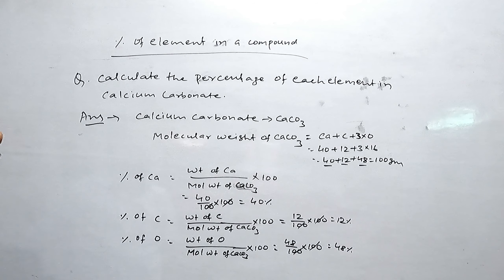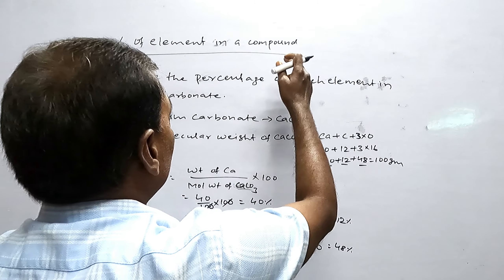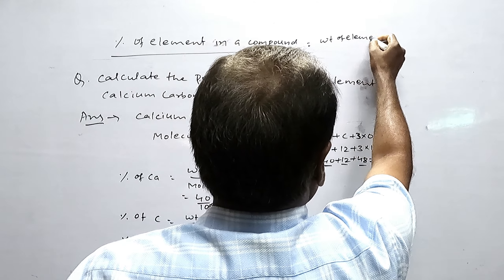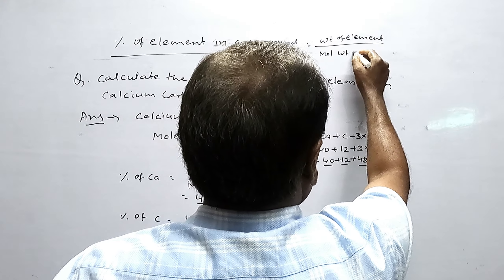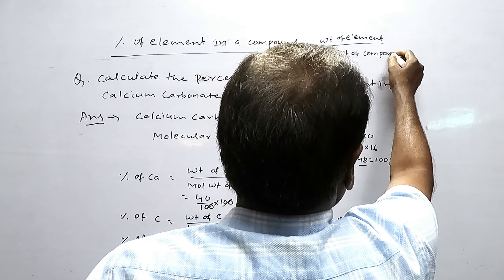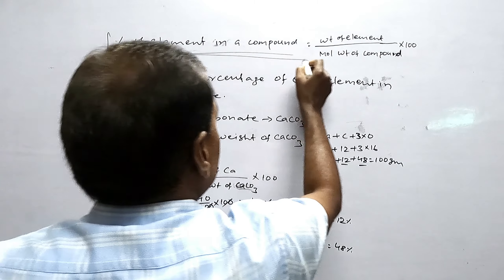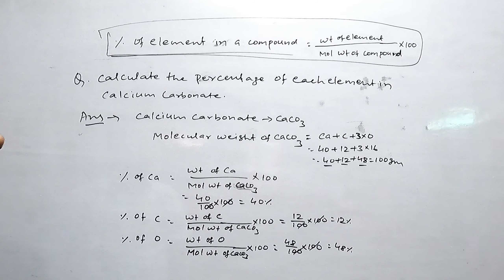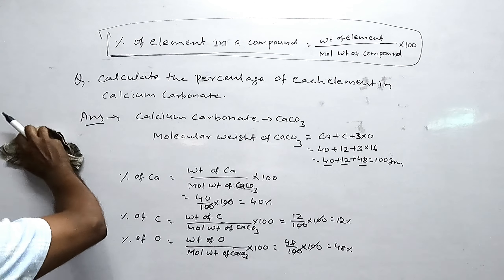The formula is: weight of element by molecular weight of compound into 100. The elements in this compound are calcium, carbon, and oxygen. Weight of element by molecular weight of compound into 100 — this is the general formula we can use to find the percentage of elements in any compound.